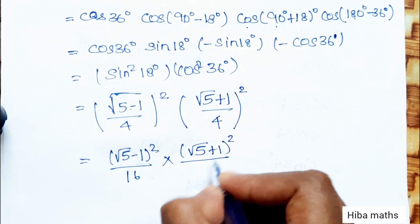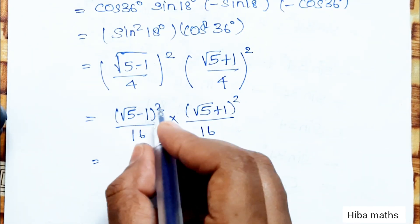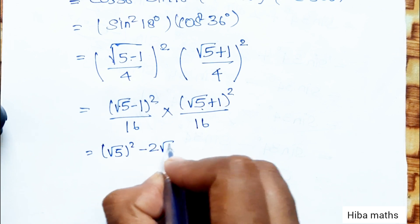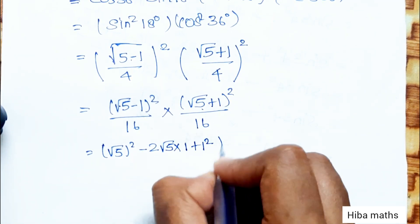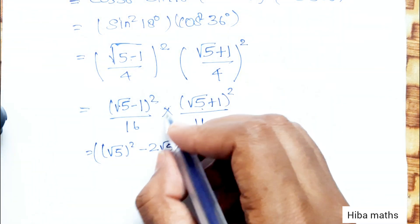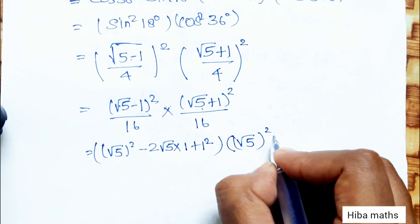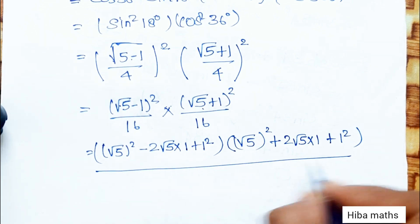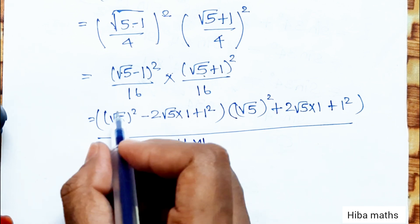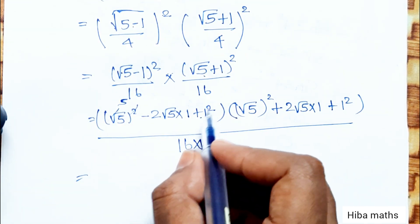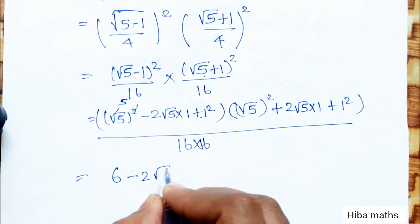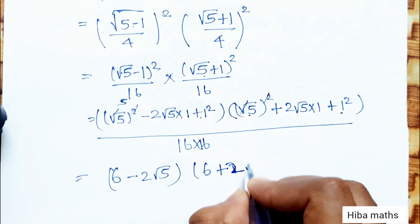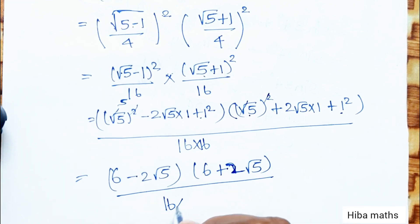We expand using (a - b)² = a² - 2ab + b² and (a + b)² = a² + 2ab + b². So (√5 - 1)² = 5 - 2√5 + 1 = 6 - 2√5, and (√5 + 1)² = 5 + 2√5 + 1 = 6 + 2√5. The product is (6 - 2√5)(6 + 2√5) divided by 256.